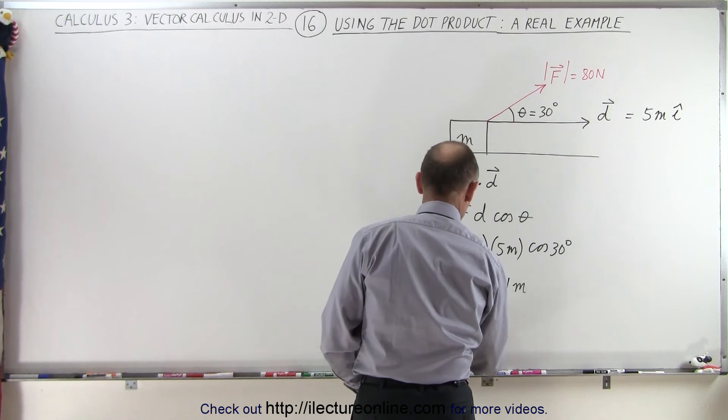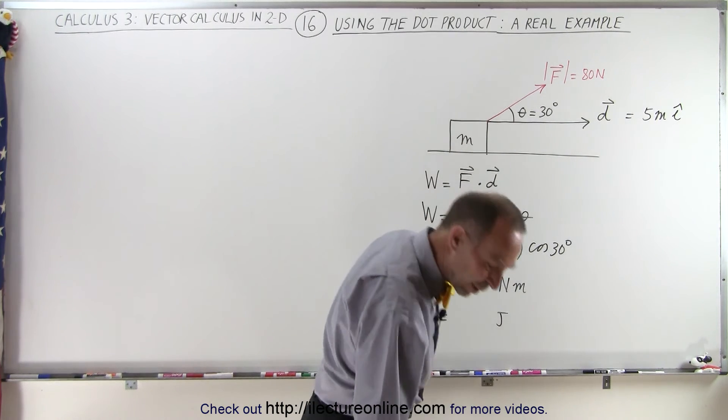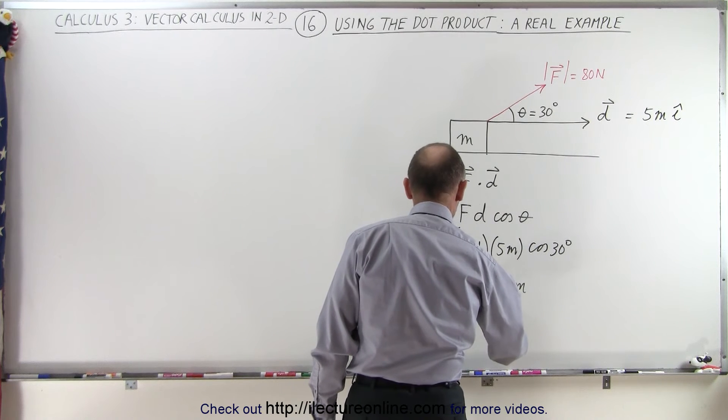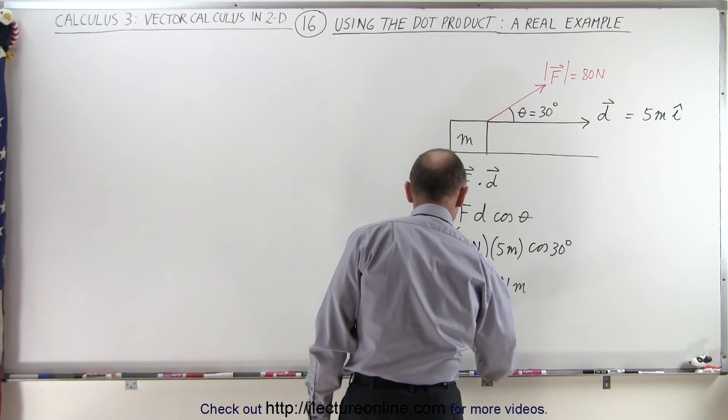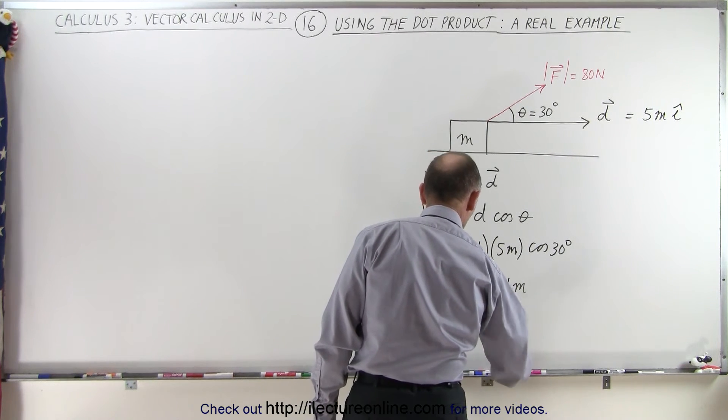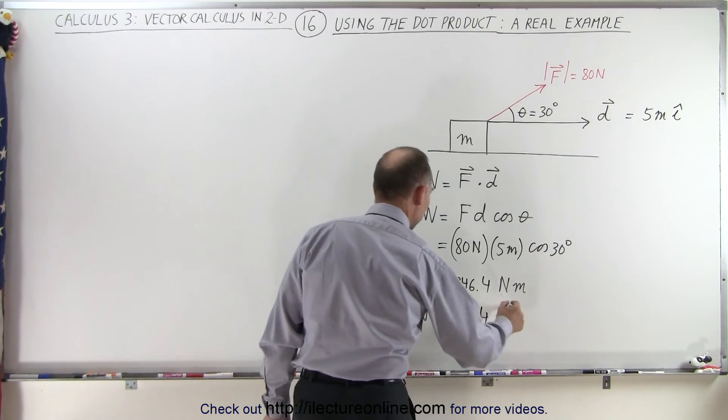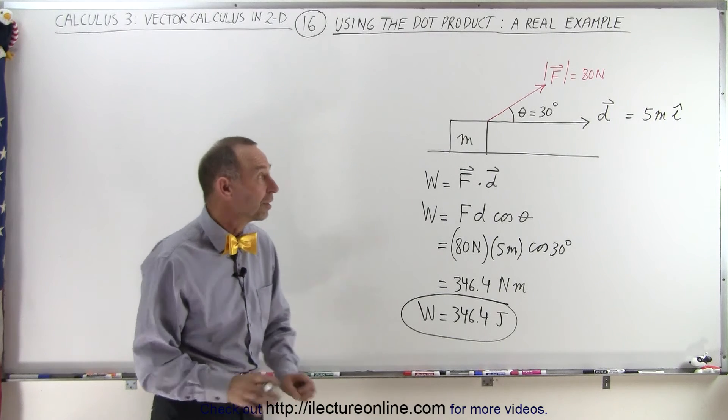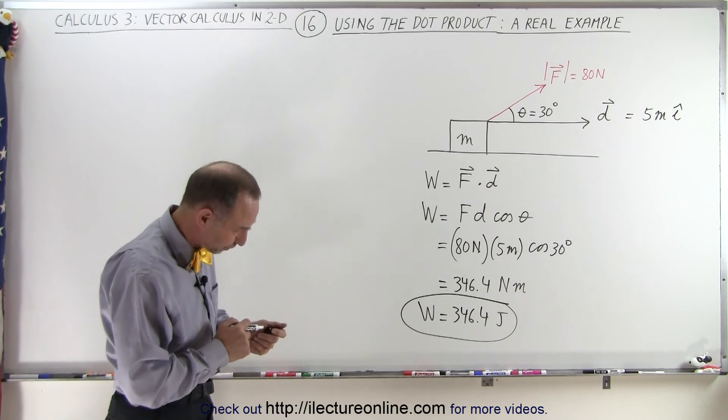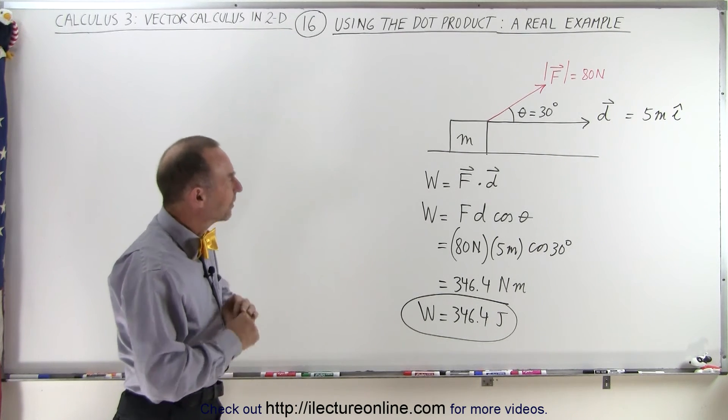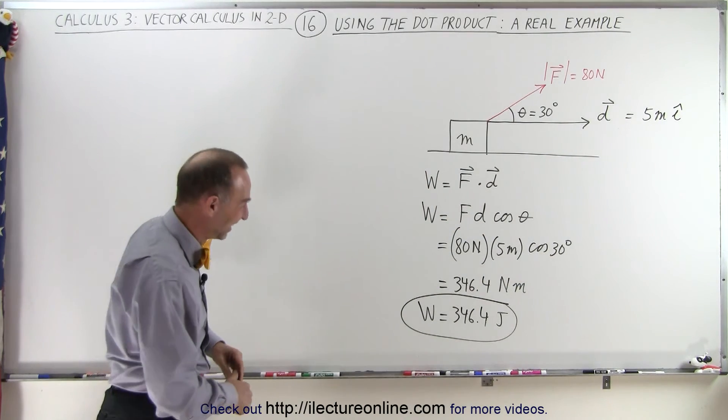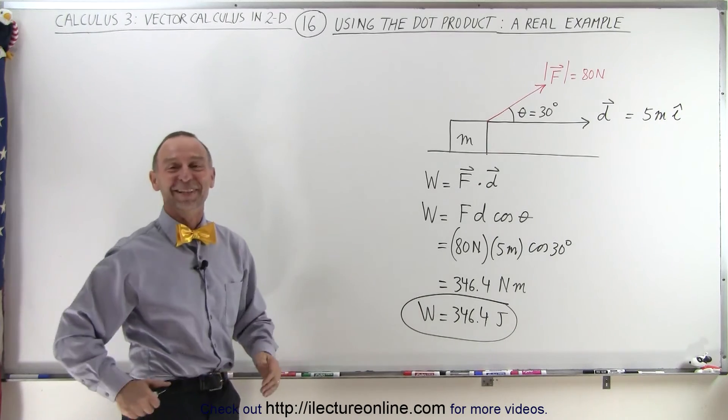Let me try this again. It is 346.4 newton meters, or 346.4 joules. So that's the work done by the force displacing that object a distance of five meters. Okay, I'm actually done. This is how it's done.